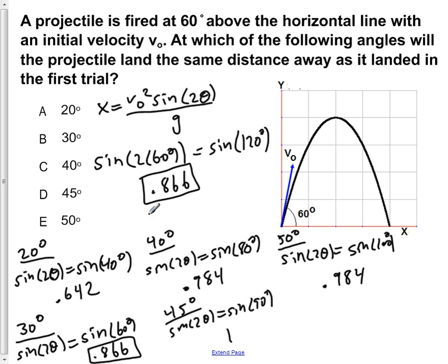So here we can see that the only other one that will give us the same horizontal range will be if we fire it at B, 30 degrees, as shown here because we get the same value.